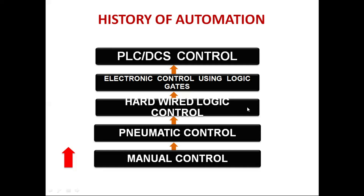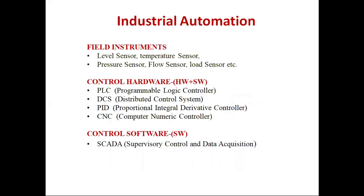Now we will discuss the different components used in industrial automation. The most important thing is field instruments. There may be different types of instruments such as level sensors, temperature sensors, pressure sensors, flow sensors, load sensors, and many more — which are used to measure process parameters. For example, a level sensor measures the level of liquid inside a tank. Depending on the tank size, different sensor types may be used, such as ultrasonic radar or capacitive level sensors.